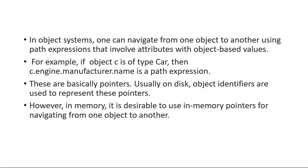For example, if there is an object C of type car, then C.engine, C.engine.manufacturer, C.engine.manufacturer.name — these are all path expressions involving different attributes. These are all basically pointers.